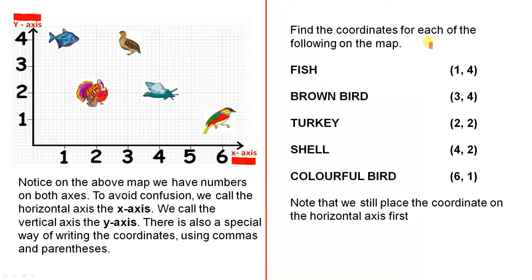Find the coordinates for each of the following on the map. Firstly the fish. Now here's the fish. So again we start from the beginning. Now remember we always go across first. One, four. Now because they're both numbers this is our special way. We open the parentheses first which are like little brackets. We put the one first, then we put a comma, and then we put a four. So the one is the horizontal axis, the four is the vertical axis. And then we close the parentheses or the brackets. So (1,4) represents the fish.